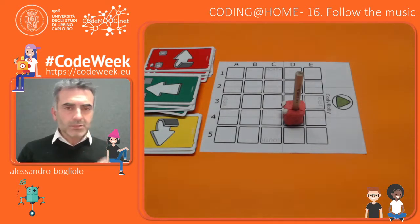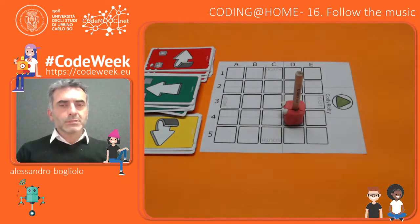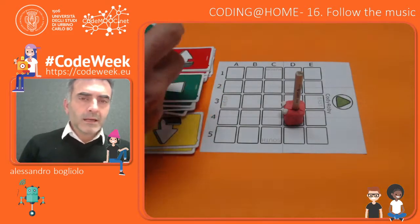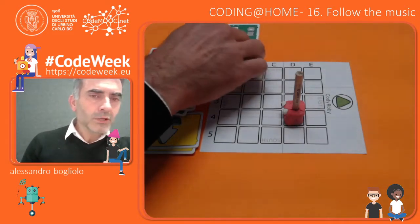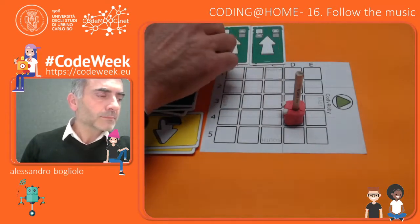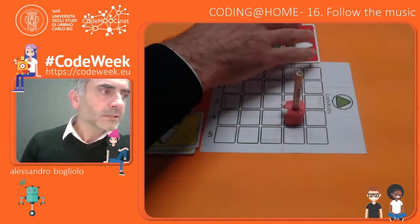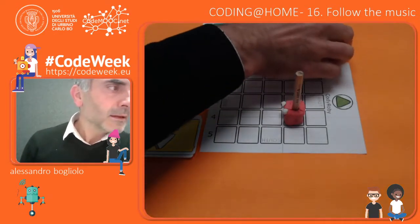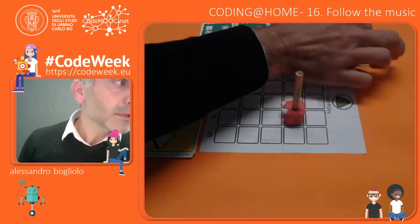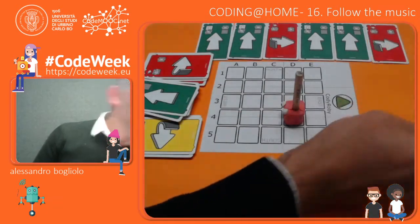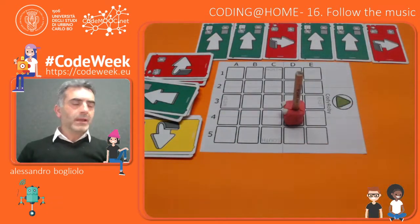Let me start by coding the robot in order to make him follow a path. I use these cards, the Coding Roby cards, to provide instructions to the robot. I write here a piece of code and then we will see where this code will bring our robot.